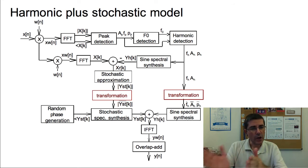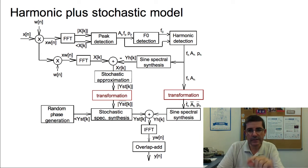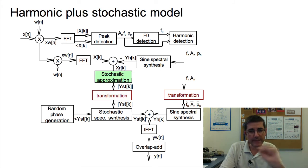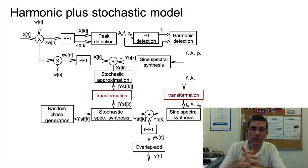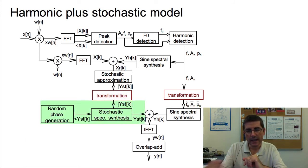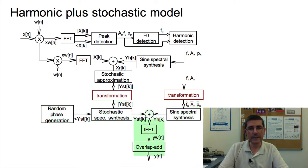Now let's go to the harmonic plus stochastic model. It's very similar to the previous one, but now the transformation is applied both to the modeling of the residual signal and to the harmonic components. We have a stochastic approximation of the residual, and therefore we can transform it quite easily because it's a model that has simplified the residual and is quite flexible for manipulations. After transformation we obtain the stochastic component and the frequency, amplitudes, and phases of the harmonic sinusoids, and we synthesize the two and sum them together.